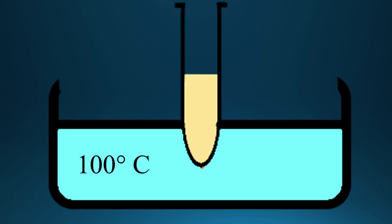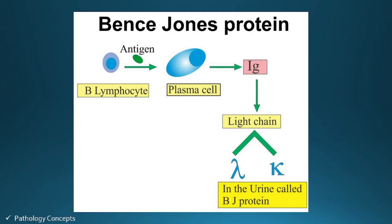The protein redissolves at 100 degrees centigrade. When a B lymphocyte is activated by antigen, a plasma cell is formed, and the plasma cell secretes immunoglobulin that contains light chains. When monoclonal secretion of light chains occurs — either kappa or lambda — it is secreted into the urine, and this protein in the urine is called Bence Jones protein.